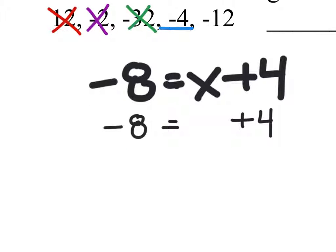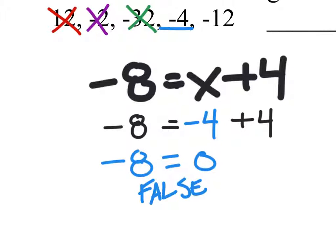Next up is this negative 4. Let's replace x with negative 4. Negative 4 plus 4 is 0. So does negative 8 equal 0? No, it does not. So that is false. We'll cross that one out as well.